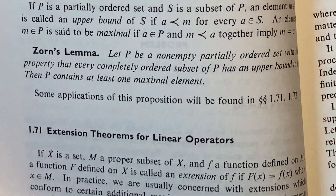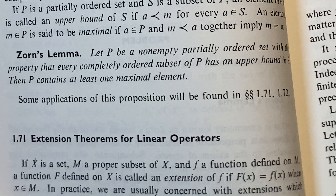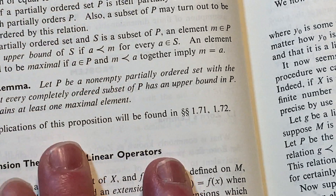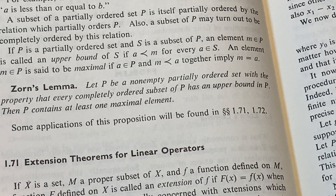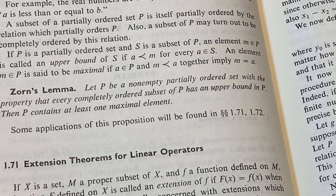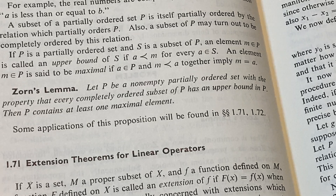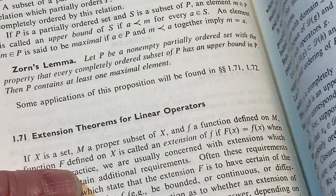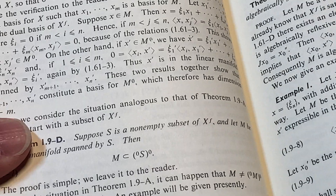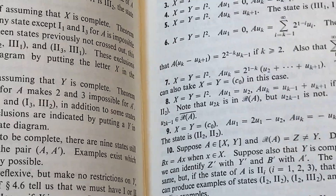Here's Zorn's Lemma — let's look at this really quick. "Let P be a non-empty partially ordered set with the property that every completely ordered subset of P has an upper bound in P, then P contains at least one maximal element." It's named after a man named Max Zorn. I had a professor who passed away and he knew Max Zorn — he used to tell us stories about Max Zorn, and there are jokes too. My experience with functional analysis was good.